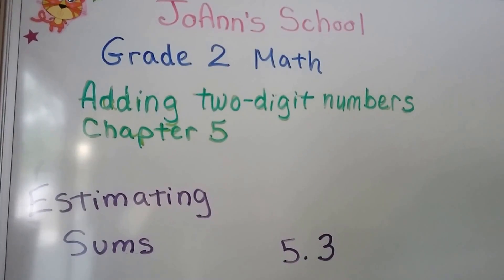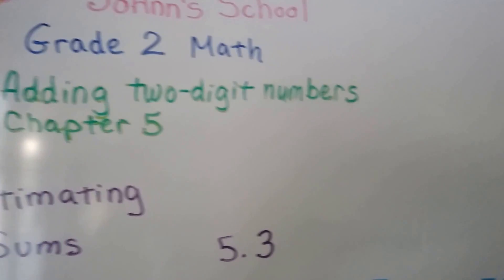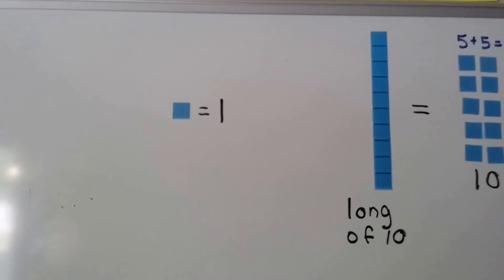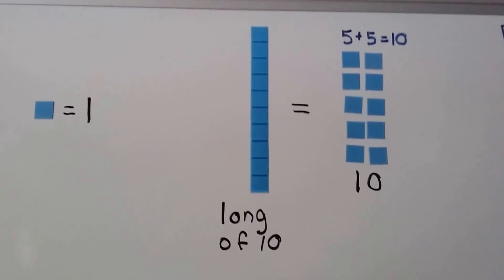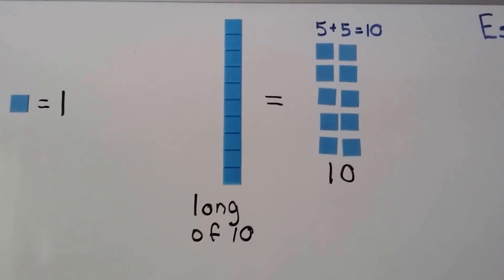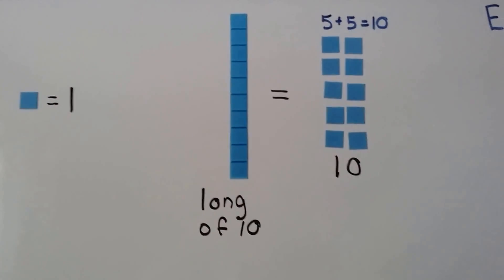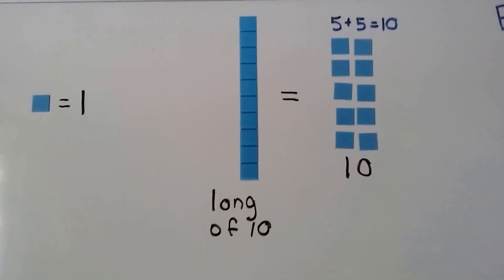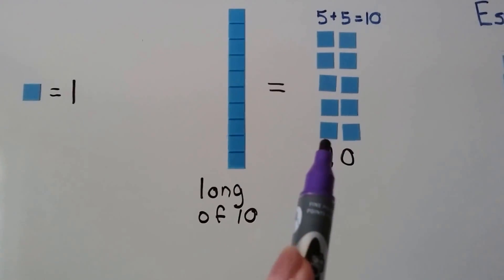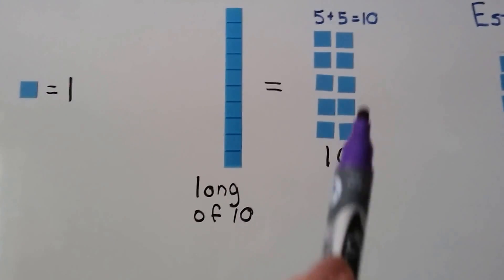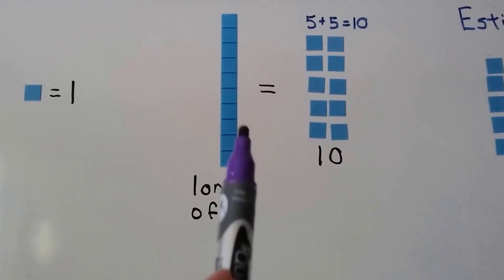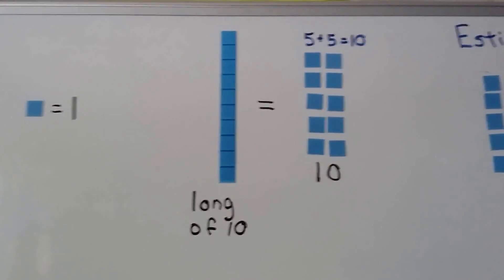Estimating sums. We know that one little square is a one, and this long one is a long of ten. If we have ten of the little ones, that would be the same thing as a long. We have ten units here — five plus five equals ten. So that's the same amount. This long is the same amount as those ten single ones.